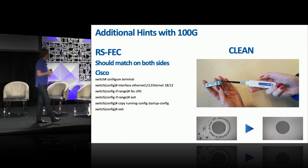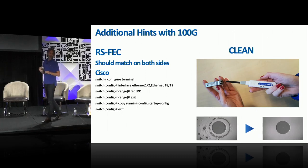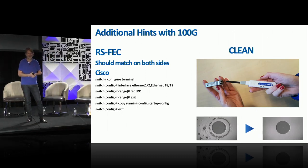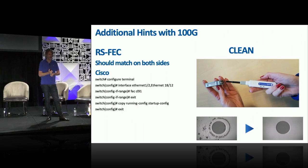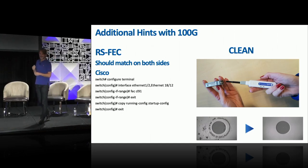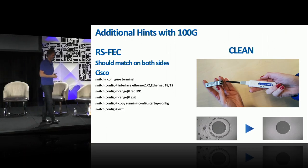Another hint: fiber cleaning. For 1G and 10G, cleaning was more marketing than necessity — we didn't find many real problems. But for 100G, you absolutely must clean your connectors. Use one-click cleaners, keep lenses clean. If you see FEC errors with 100G, it's typically a cleaning issue. Train your technicians to do this routinely — it's no longer just a marketing trick, it's essential.